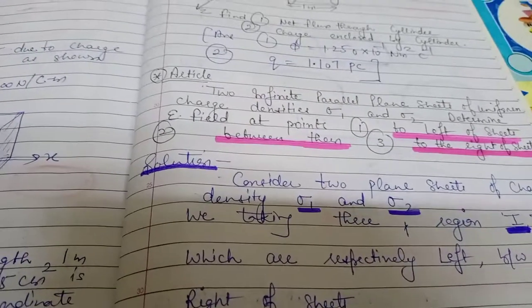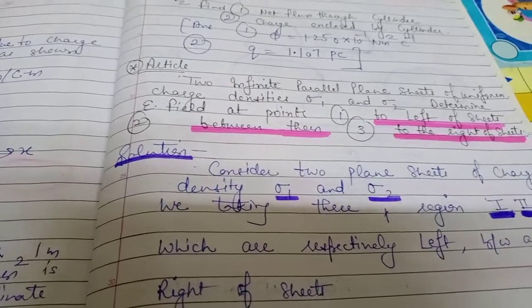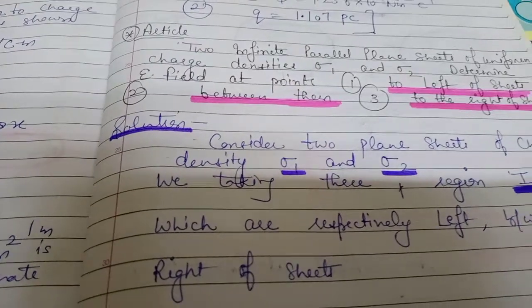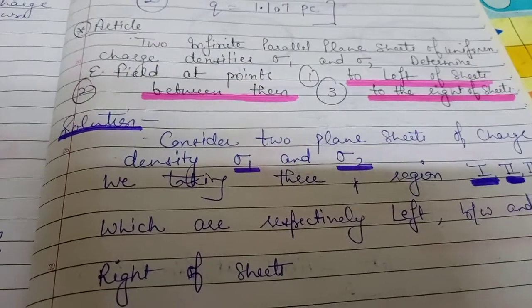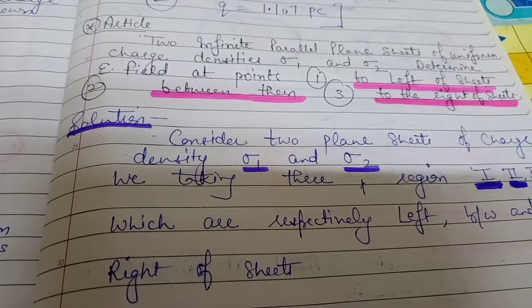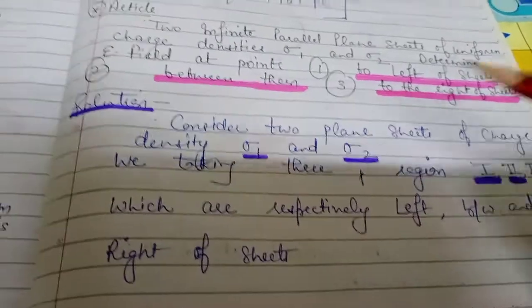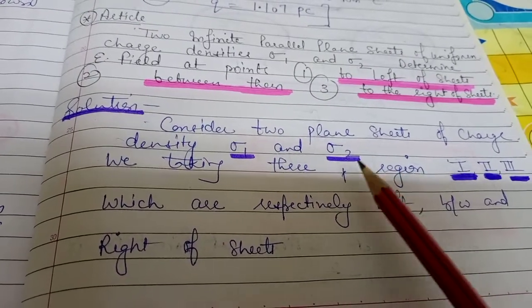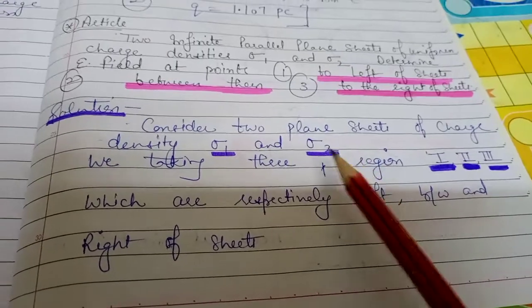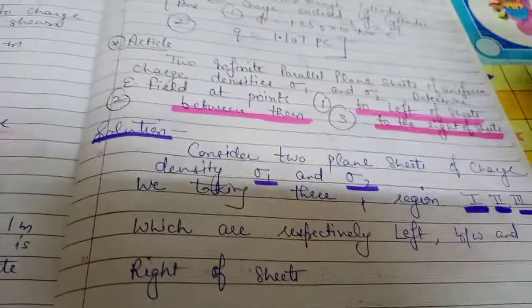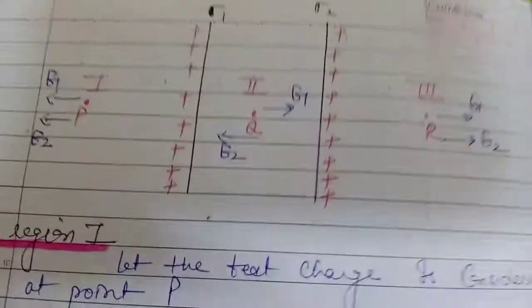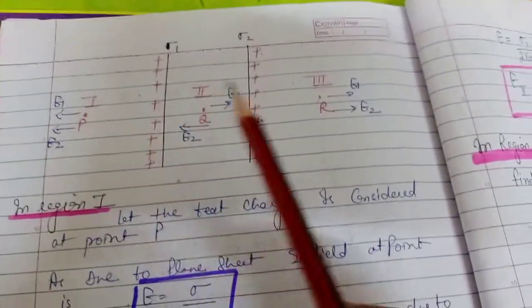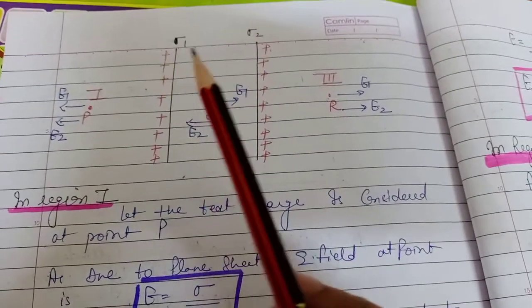The article is: if you have two plane sheets and their surface charge densities are sigma 1 and sigma 2, then determine the electric field at the point to the left of the sheets, between the sheets, and to the right of the sheets. We have considered that the two sheets have different surface charge densities — sigma 1 and sigma 2. Now let's look at the diagram. There are two plane sheets with surface charge density sigma 1 and sigma 2.